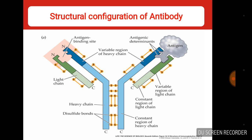The remaining regions of the heavy and light chains are called the constant region, denoted as CH and CL. Each antibody molecule has two antigen-binding sites, also called domains. The light chains are of two types: kappa and lambda, and both types can be present in the same antibody class.